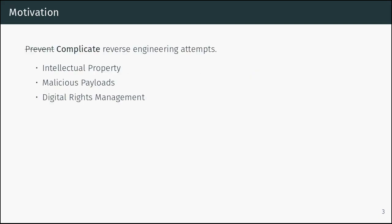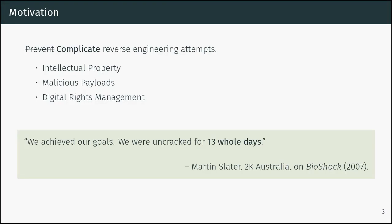What is code obfuscation? Code obfuscation is a technique with the goal to prevent or complicate reverse engineering attempts. For instance, if you're a company that wants to protect your intellectual property, if you're a malware author wanting to prevent analysis of your payload, or you also find this in DRM systems. We marked 'complicate' instead of 'prevent' because there's one well-known statement from Martin Slosa, one of the authors of Bioshock. He said, 'We achieved our goals. We were uncracked for 13 whole days.'